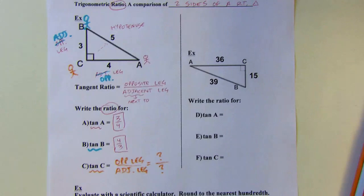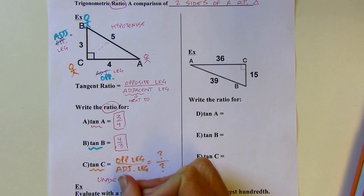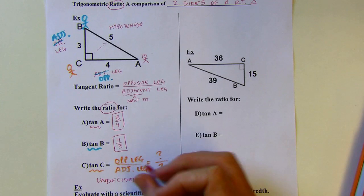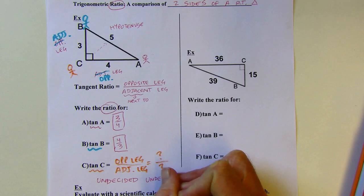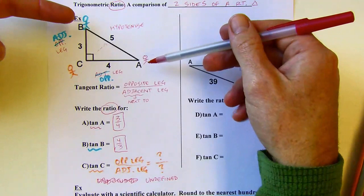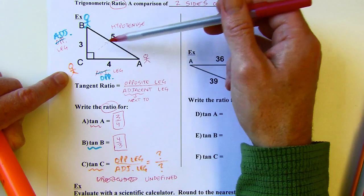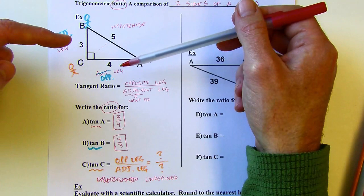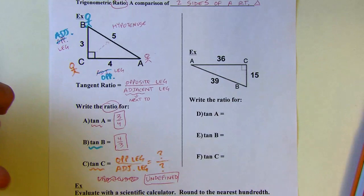When doing these trigonometric ratios, it's just the tangent ratio for now, but there are others later. This is only going to work from the acute angles. You're never going to be able to take the tangent ratio from a 90-degree angle because you don't have an opposite leg, and you have two adjacent legs to choose from, so it's not going to be defined. Later, using a calculator, you might get an error message if you try to find the tangent ratio from a right angle.